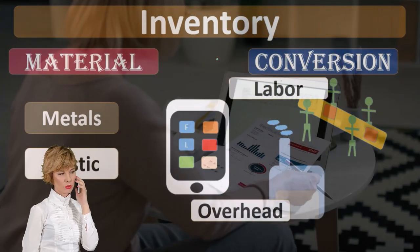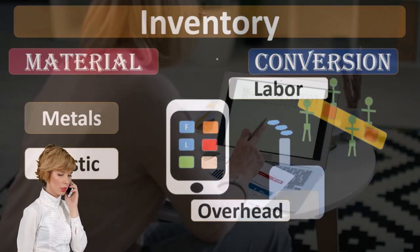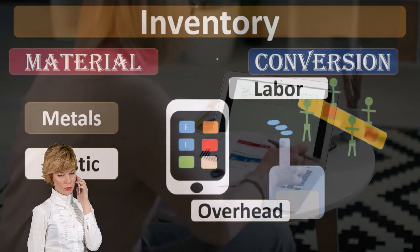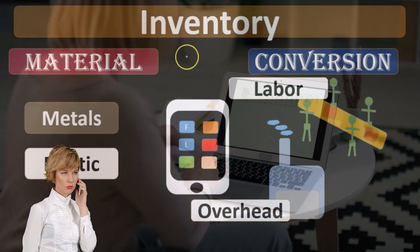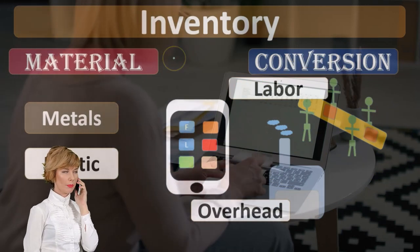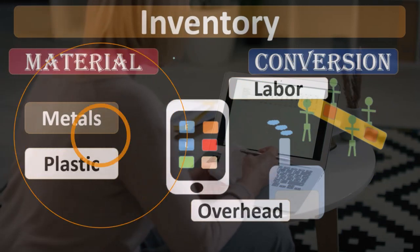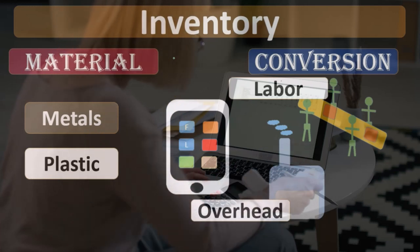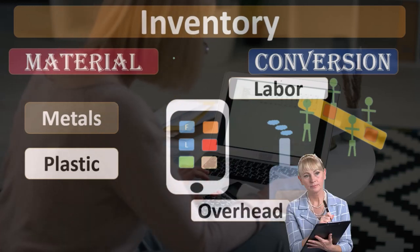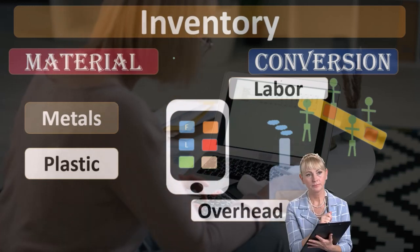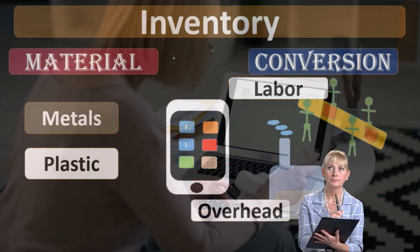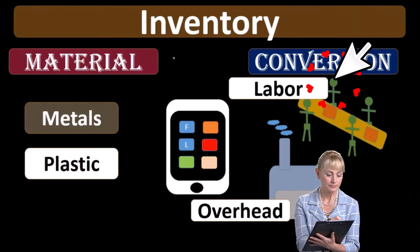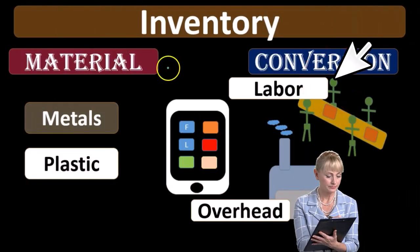So the groupings for inventory in manufacturing — for any inventory somewhere along the production process — will be materials, the raw things. And then a large component of that inventory includes the conversion costs, the things needed to make those materials into something we actually want. That's going to be the labor, and that's going to be the overhead.